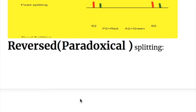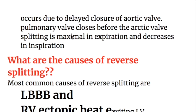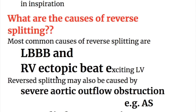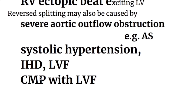Reversed or paradoxical splitting occurs due to delayed closure of the aortic valve, where the pulmonary valve closes before the aortic valve. Splitting is maximal in expiration and decreases in inspiration. The most common cause is left bundle branch block, and also right ventricular ectopic beat that excites the left ventricle. Reversed splitting may also be caused by severe aortic outflow obstruction such as aortic stenosis, and also occurs in systolic hypertension, ischemic heart disease, left ventricular failure, and cardiomyopathy with left ventricular failure.